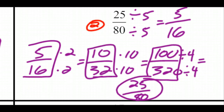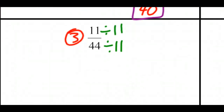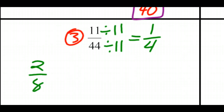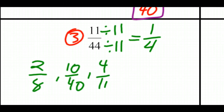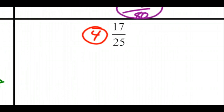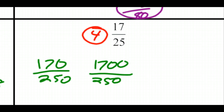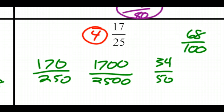Any of these fractions — along with any fraction you create by multiplying and dividing by the same number in numerator and denominator — will be equivalent fractions. For 11 over 44, divide both by 11 and end up with 1 fourth. Equivalent fractions to 1 fourth include 2 eighths, 10 fortieths, 4 sixteenths, 3 twelfths, 7 twenty-eighths, and so on. For 17 over 25, it's already in simplest form, so equivalent fractions include 34 over 50, 68 over 100, 170 over 250, and so on — all equivalent fractions to 17 over 25.